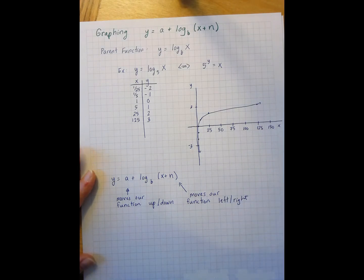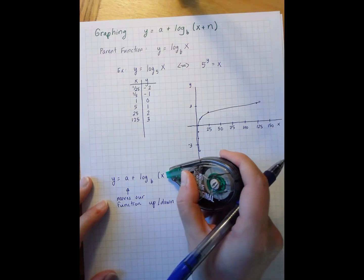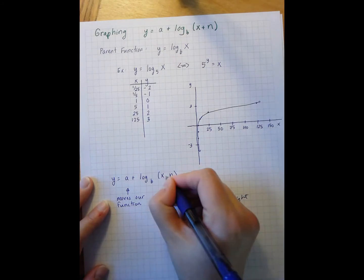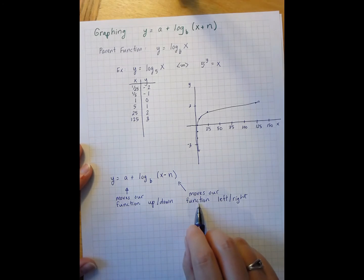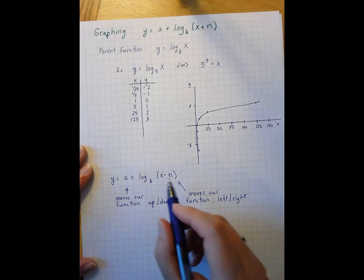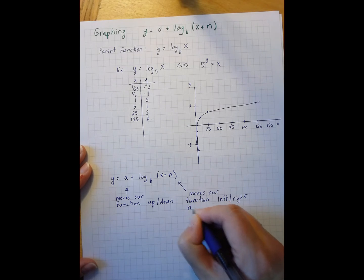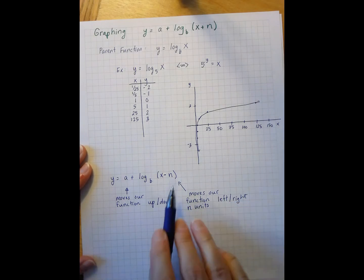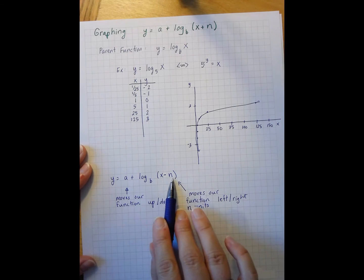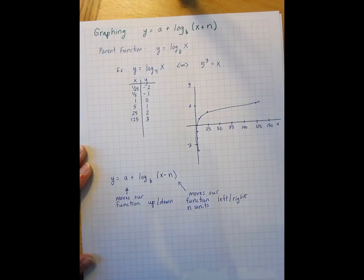Officially, like in parabolas, this should be minus n, which means we move it n units. When n is positive we move it right, and when n is negative — meaning x plus something — we move it left.